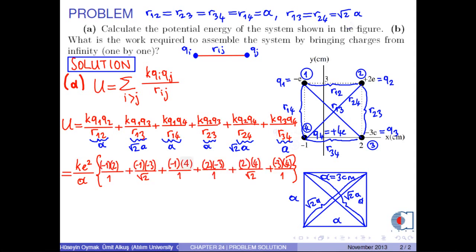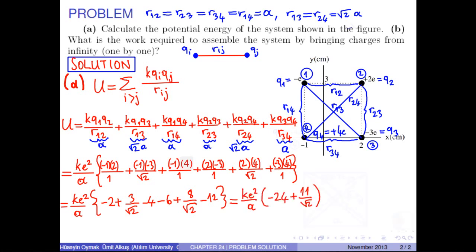or simply, then calculation gives k times e squared over a times negative 24 plus 11 over square root of 2.